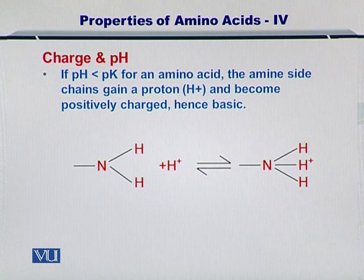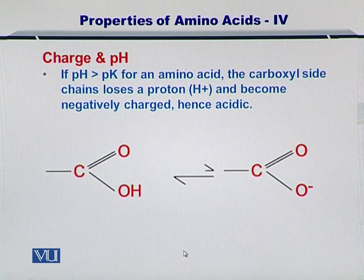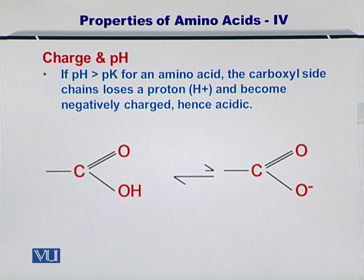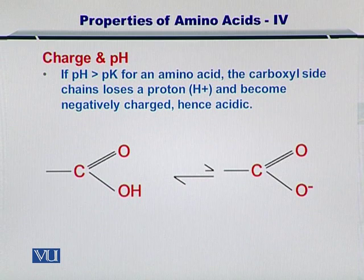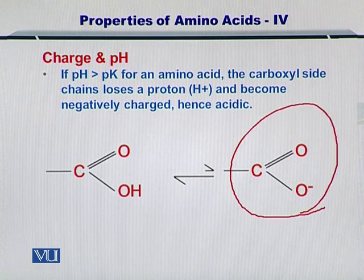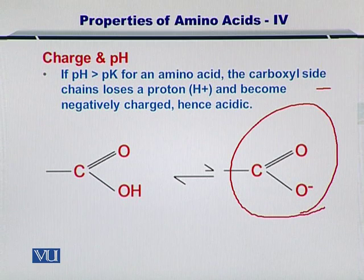What if the case is reversed? If the pH is greater than the pK for an amino acid, the carboxyl side chain loses a proton as opposed to the previous case. Upon losing a proton, the carboxyl group becomes negatively charged and hence acidic. The overall charge of the carboxyl group is negative, and this occurs only at a pH greater than the pK value.